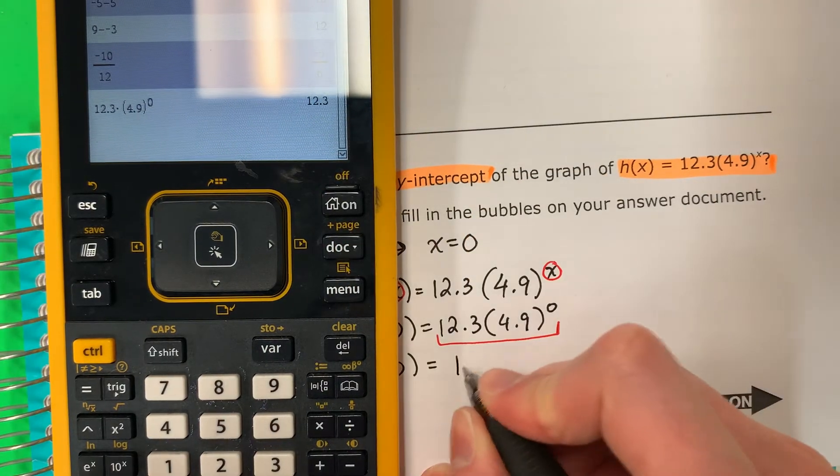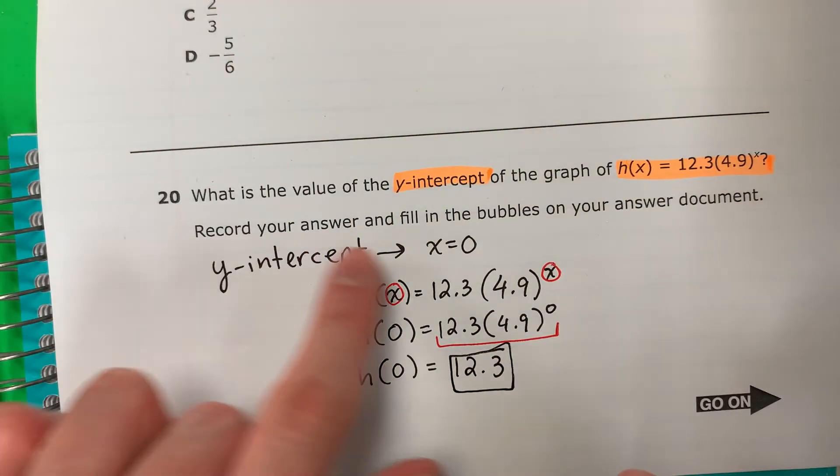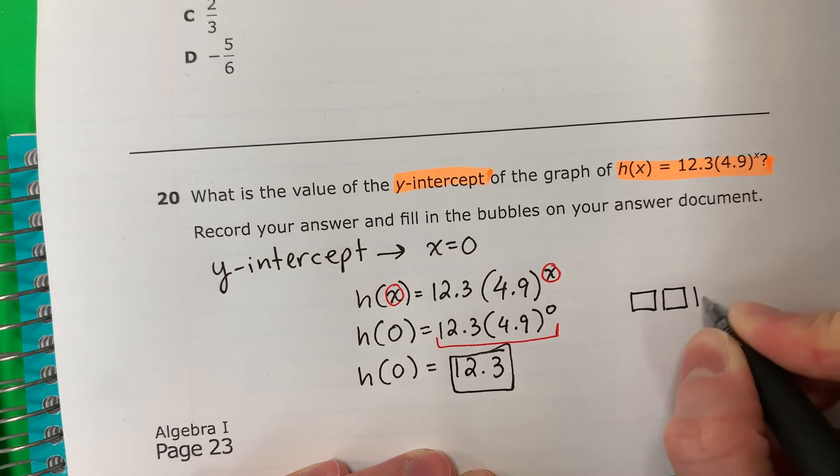My answer is 12.3. That's my answer. So whenever you need to bubble it in, you're going to have some boxes. Van a tener cajas, así.